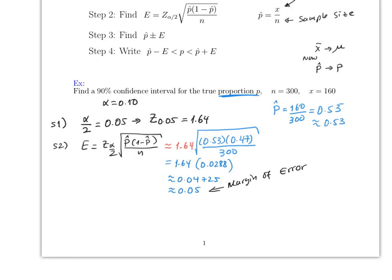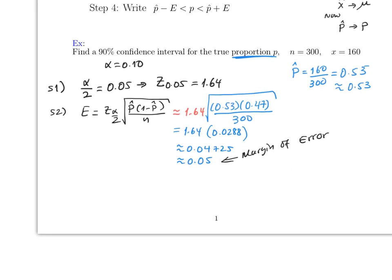Remember that this is called the margin of error. And then all you have to do is just plug it into the formula for step 3. So for step 3, we have p hat plus or minus E, which in our case it will be 0.53 plus or minus 0.05.